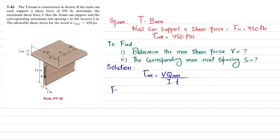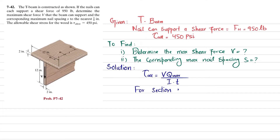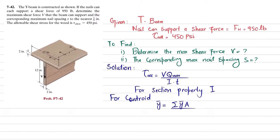For section properties, we will find I, the second moment of inertia. But we do not know the centroid of this section. So for the centroid, we have the formula: Y-bar equals the sum of Y-prime times A divided by the sum of area.